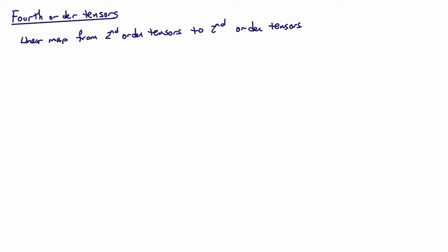I'd like to discuss the concept of fourth-order tensors. There are a number of different ways to define them. We're going to pick a fairly straightforward way. So we're going to define it kind of like we did with second-order tensors. Second-order tensors are a linear map from vectors to vectors. Fourth-order tensors we will define as a linear map from second-order tensors to second-order tensors, and the operation is linear.